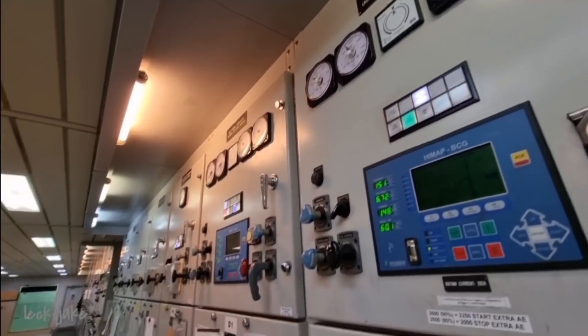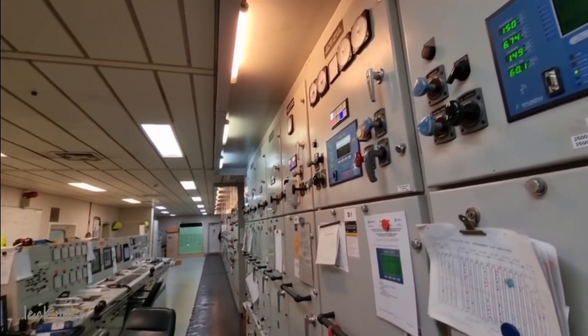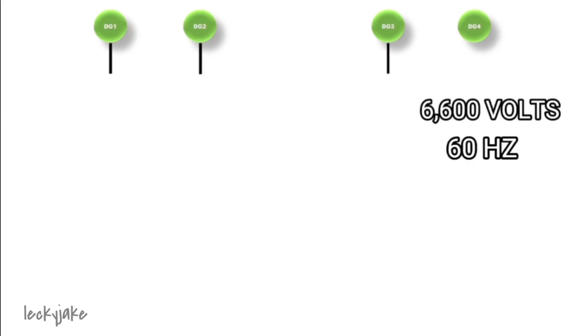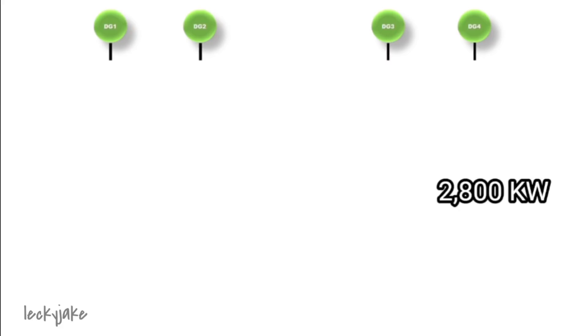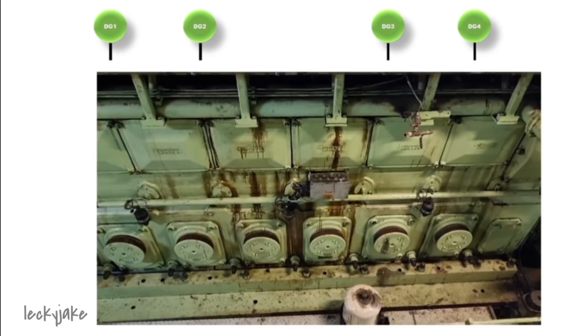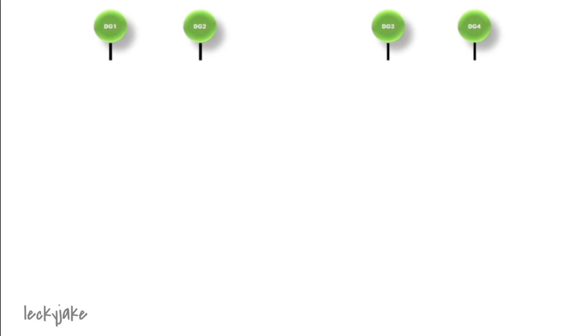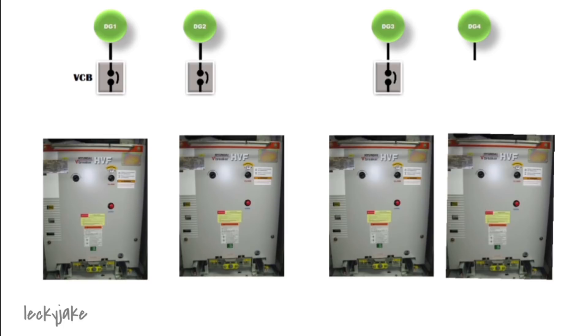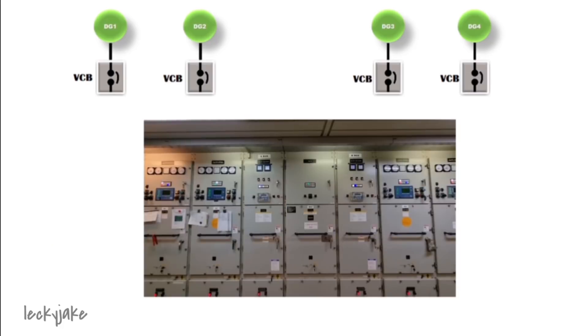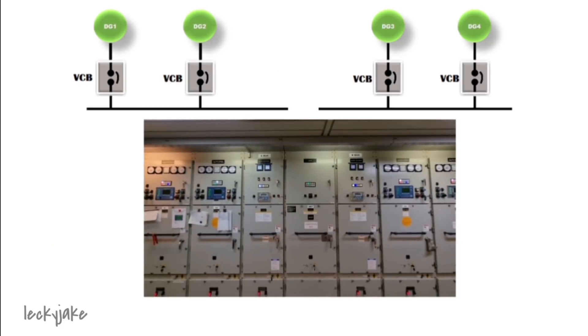So to understand it further, let's discuss this in a line diagram. We have four generators on board which supply 6600 volts at 60 hertz with a nominal load of 2800 kilowatts. This produced electricity will pass through individual vacuum circuit breaker first, and then these VCBs will be connected into the bus bar.